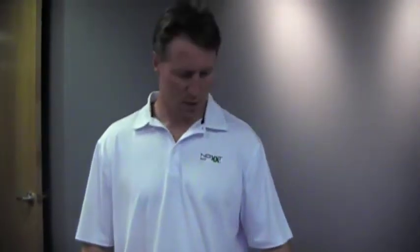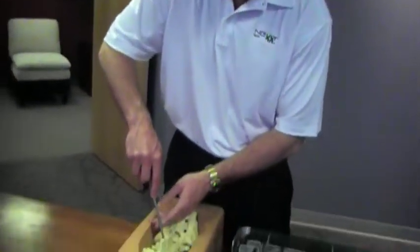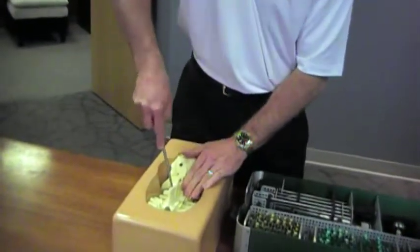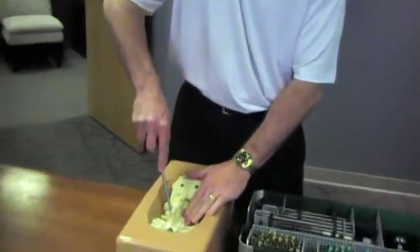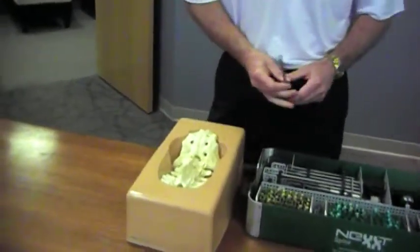We're going to do a sawbones example of how to use all the instruments, starting with our awl. We are poking into our pedicle to break the cortex. We're going to do a one level, so I'm going to pop two cortex in this case.